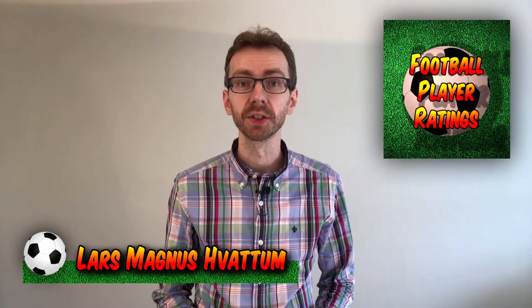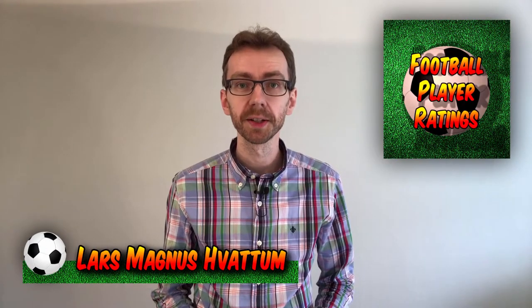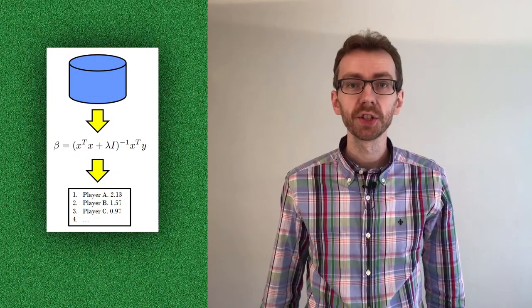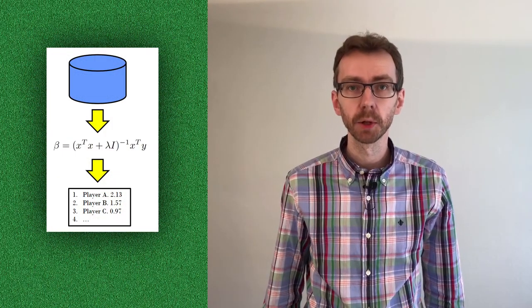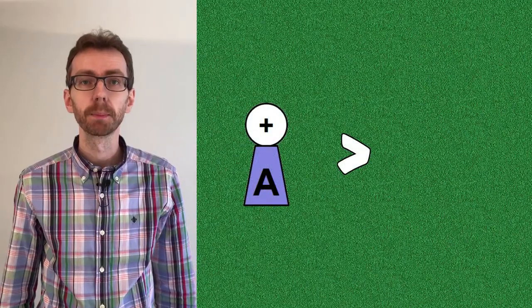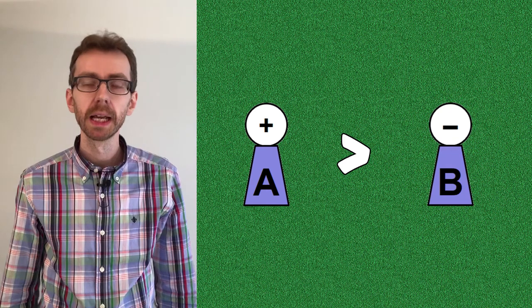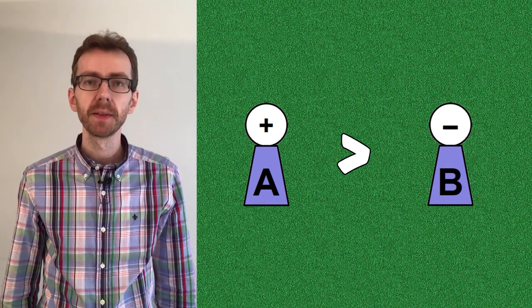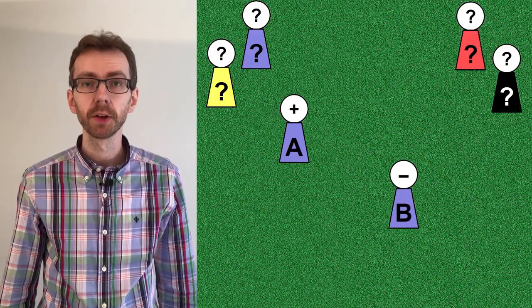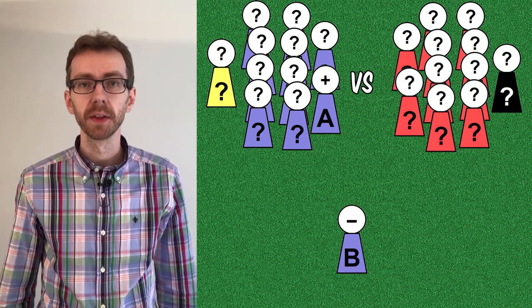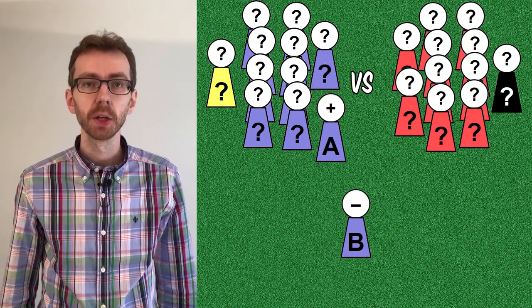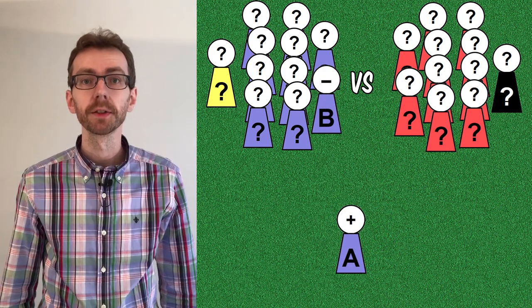In this video we will look at the top 100 players according to our mathematical model. If you are new to this channel, here is a short version of how we use a mathematical model to evaluate football players. When we say that a player is better than another player, we simply mean that a team using the better player on the pitch would, over time, obtain a better goal difference than the same team using the other player, all else being equal.